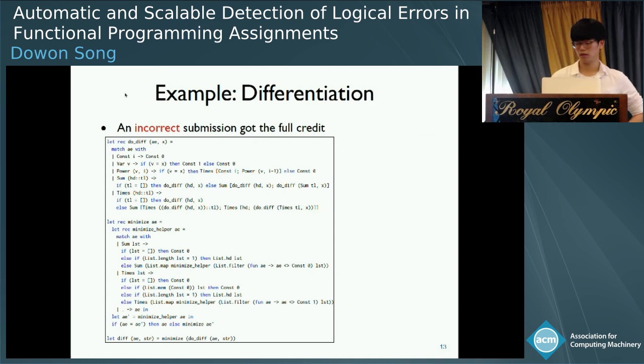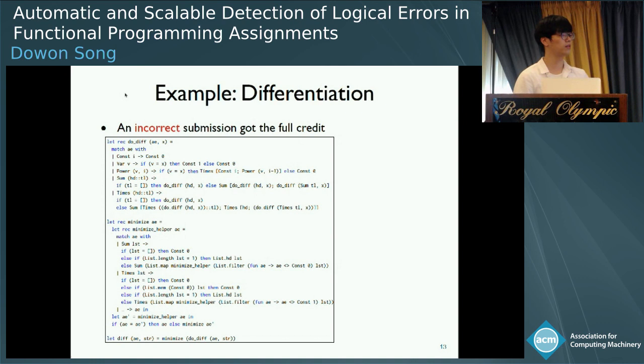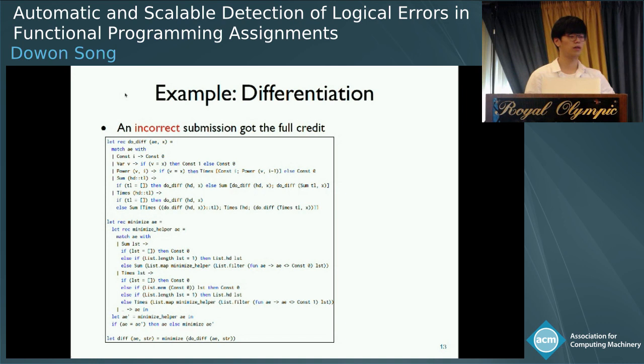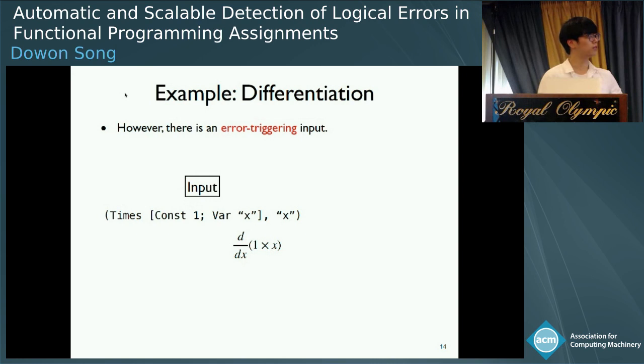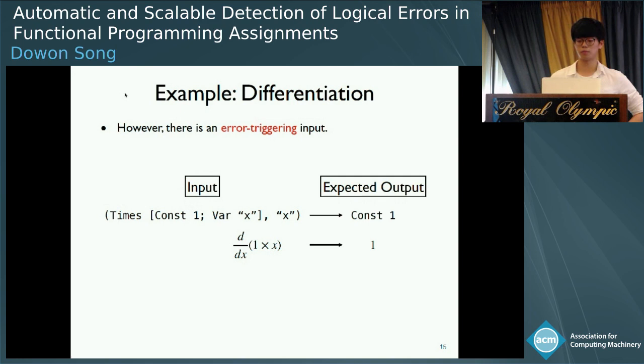However, these well-trained test cases often fail to detect some errors. This is one of the submissions we received from students. As the student is not familiar with programming, she wrote a very complicated and syntactically different code from the solution. This program passed all the test cases and got full credit. However, we found that it has a very tricky error which is hard to detect. To detect the error, we need this simple input: one times x. When the correct implementation takes this, the expected output is constant one. However, with this input, the submission returns constant zero, which is absolutely incorrect.